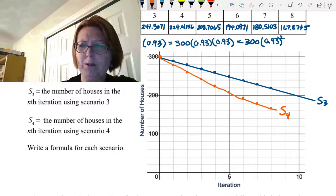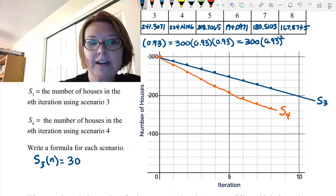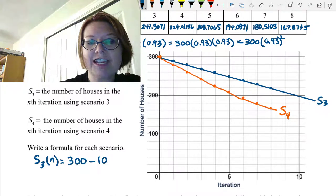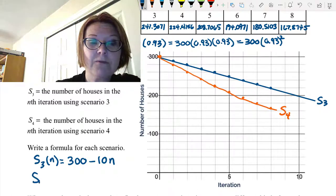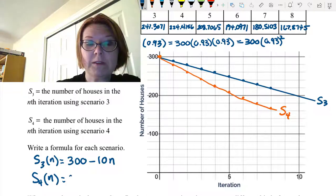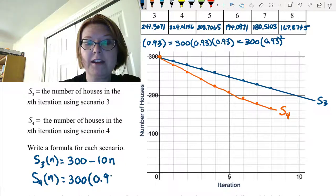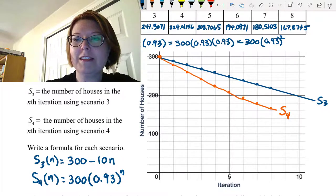Now let's just write the formula for both of those curves. Scenario 3 we would write as S sub 3 of N, and we started with 300 houses and we subtracted 10 for every iteration, which would be 300 minus 10N. For scenario 4, that's S sub 4 of N. We start with 300 houses and then every iteration we multiply that by 0.93 to the Nth power. So that would be 300 times 0.93 to the Nth power. Let's go over to Desmos and take a look at that.